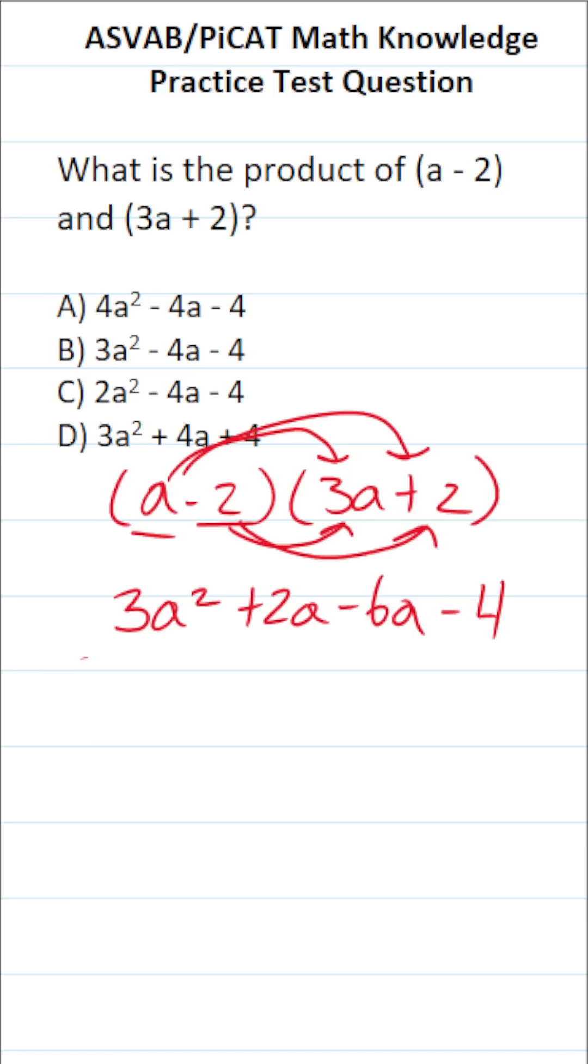All right, we have to simplify this expression by combining like terms. a squared doesn't have a corresponding like term. So this is just 3a squared. Just bring it down.